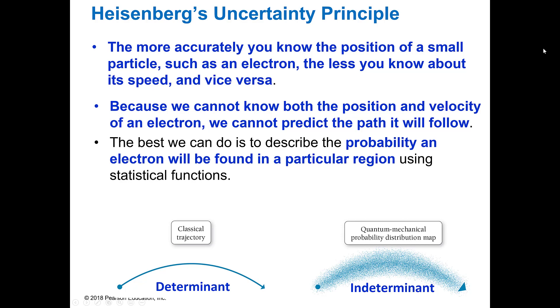The Heisenberg uncertainty principle: the more accurately you know where something is, the less you know about how fast it's going, because by the time you look at it, it's gone. Because we cannot know where it is and how fast it's going at the same time, we can't predict the exact path that it'll follow. The best we can do is we use probability. And probability means that we can find it in a certain area, and that's what we do a plot graph for.